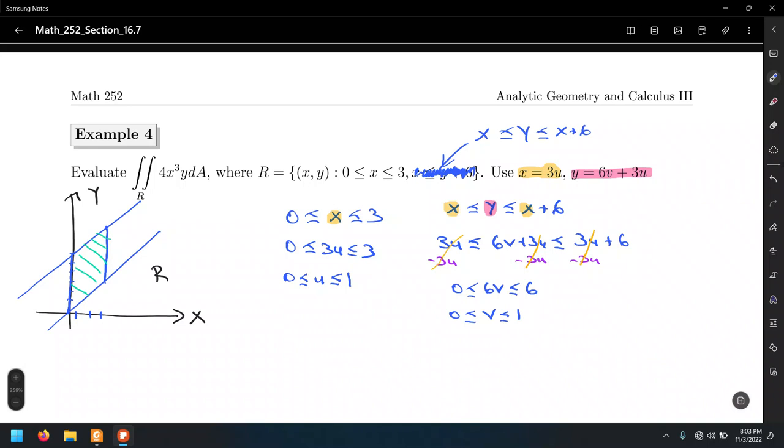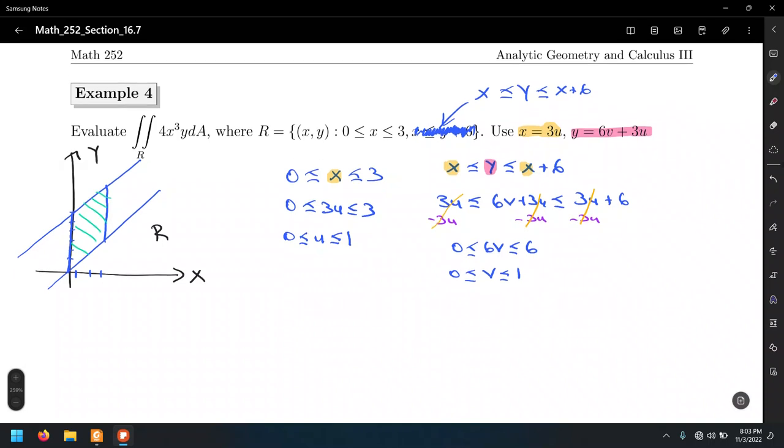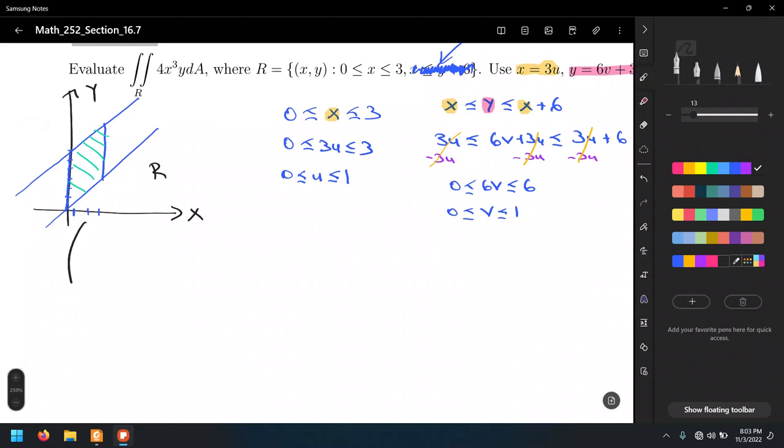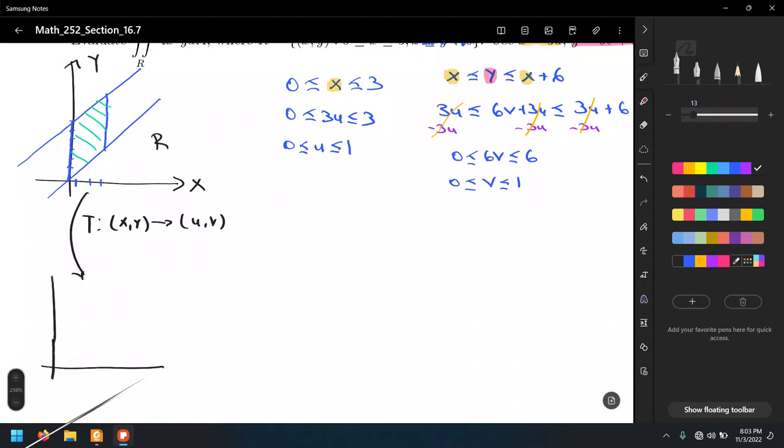In this case, no need to do the weird substitutions that we did in the previous example, because we can do the substitutions within the inequalities themselves. That means that the region S, which is a region of u and v, the transformation which goes from x, y to u and v.